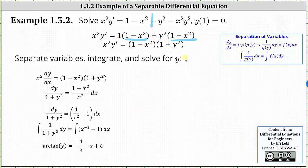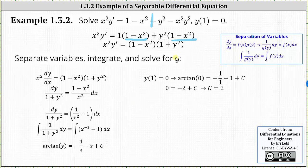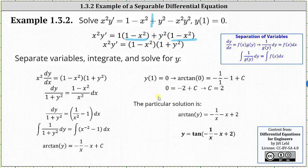Now that we have the general solution, we determine the particular solution using the initial condition y of one equals zero. Substituting one for x and zero for y and solving for C gives us arctangent zero equals negative one divided by one minus one plus C. Since arctangent of zero equals zero, we have zero equals negative two plus C, so adding two to both sides gives C equals two. This gives the particular solution arctangent y equals negative one divided by x minus x plus two.